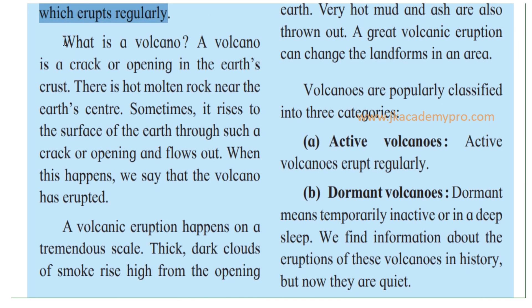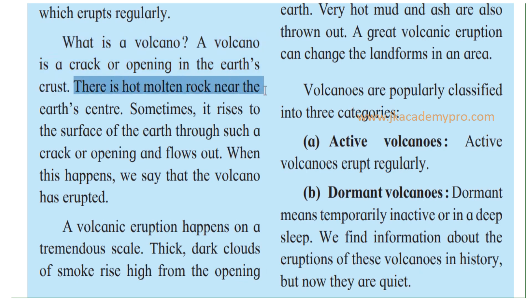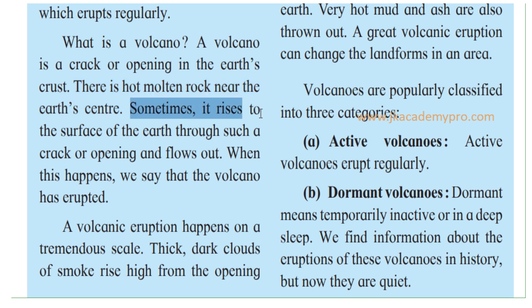Now, let's understand what is a volcano. A volcano is a crack or opening in the Earth's crust. We have learnt that the outer layer of the Earth is the Earth's crust. There is a crack or an opening in this Earth's crust, and from this crack there is a hot molten rock near the Earth's center. The Earth's center is very, very hot — even the rocks melt. This molten rock is near the center; 'molten' means the rock that has melted. It is also called lava when it comes out of the volcano.